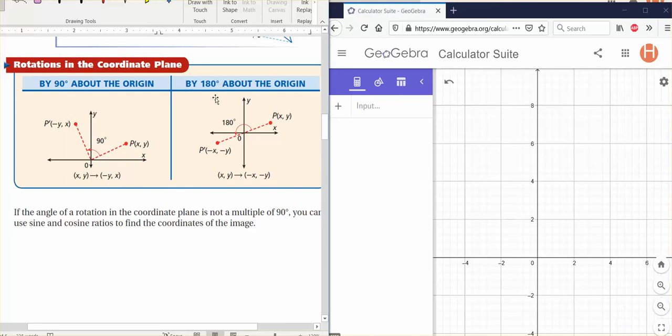We will also rotate 180 degrees about the origin. The rule is easier to remember. You just take the opposite sign of both of your coordinates and don't move them.